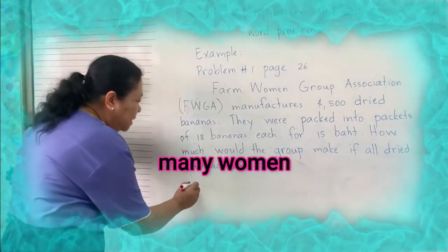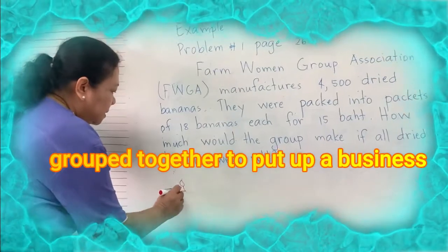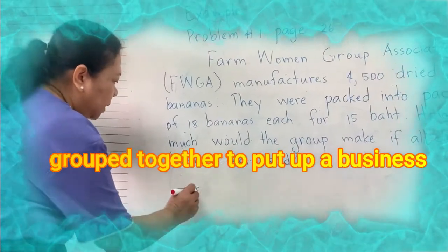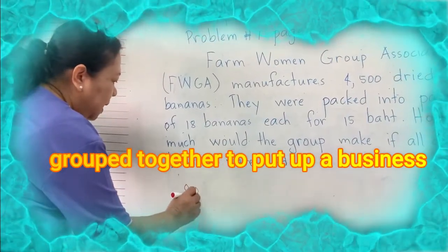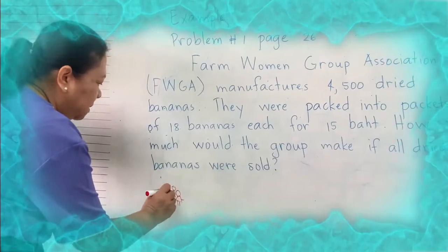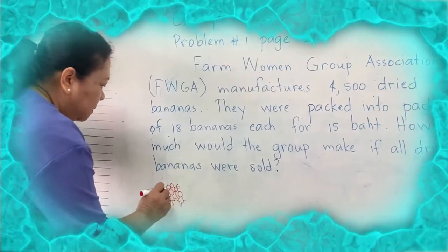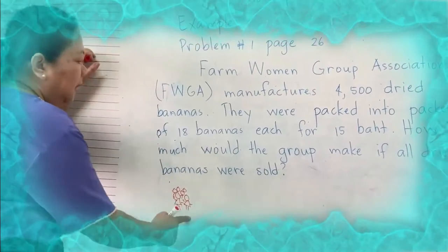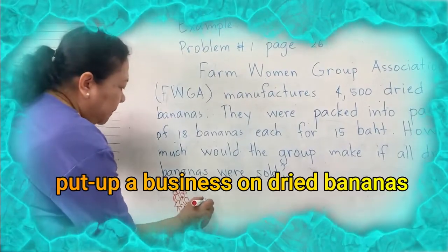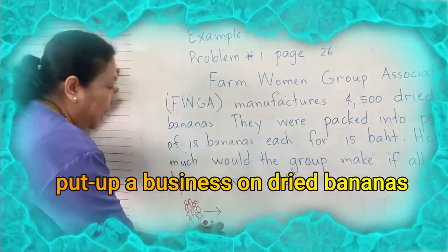So there are many women. They are grouped together to make business, and many more women. Then, they put up a business of dried bananas.